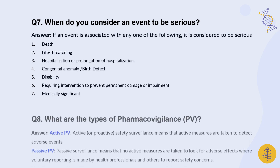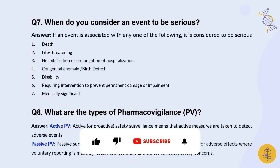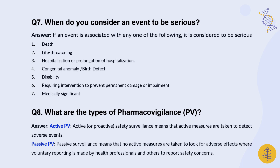Another question interviewers ask is about the types of pharmacovigilance. There are two types: active and passive. Active pharmacovigilance is a proactive activity where safety surveillance is conducted — measures are taken to detect adverse events before they are reported. Passive pharmacovigilance refers to efforts taken after adverse events are reported, through voluntary reporting by healthcare professionals and patients. In active pharmacovigilance you go searching for adverse events; in passive pharmacovigilance, the events are reported to you.